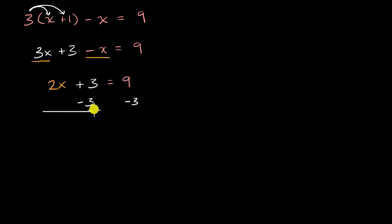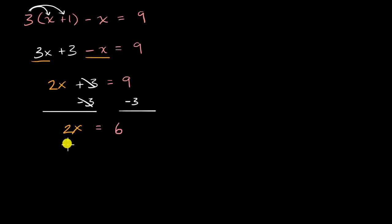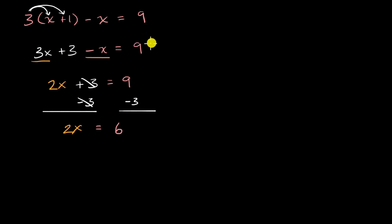Three and negative three cancel out, and on the left-hand side I'm just left with two x. On the right-hand side, nine minus three is equal to six. So two x equals six is an equivalent equation to three times x plus one minus x equals nine, because we've done these algebraically valid operations to maintain the equality.